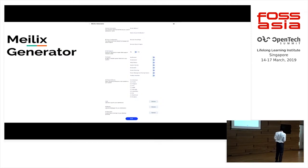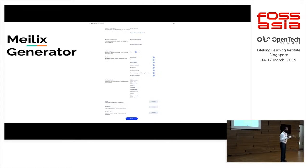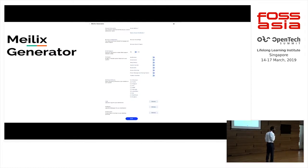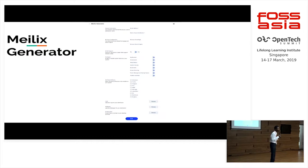There is a browser homepage field and a browser search engine field. If you selected a browser to be installed, you can set a particular link as the homepage of that browser, or a particular link from which all searches will be made as the browser search engine. There is also 32-bit and 64-bit support. By default, if you don't check the button it will be 64-bit; if you check it, you will get the OS in 32-bit.